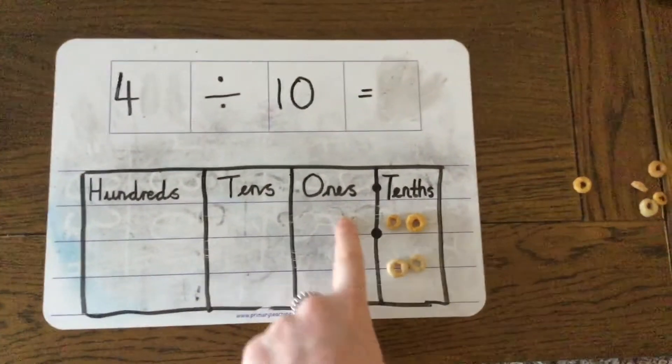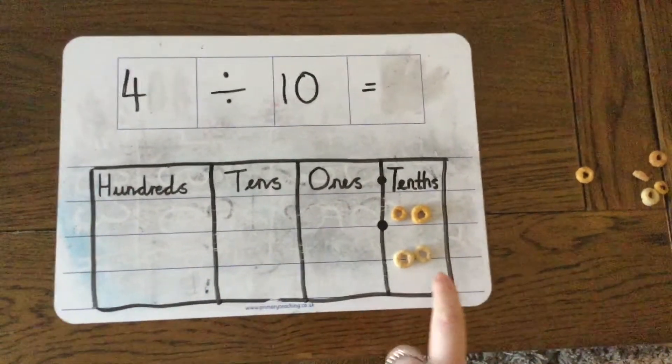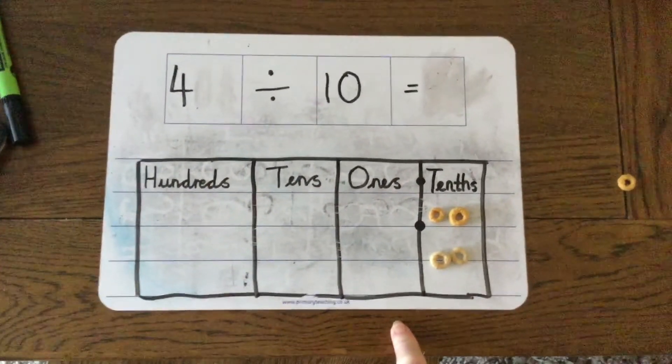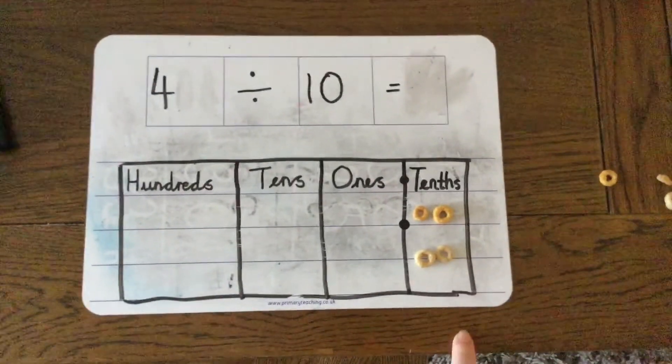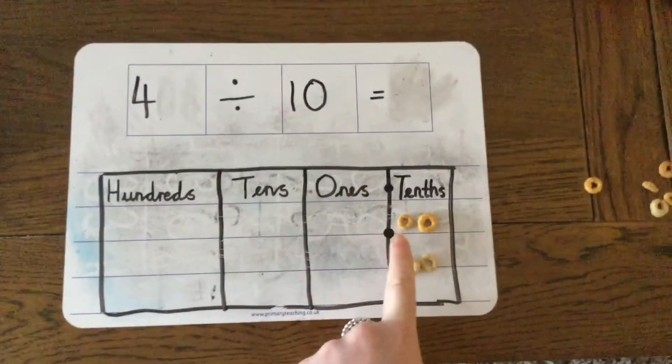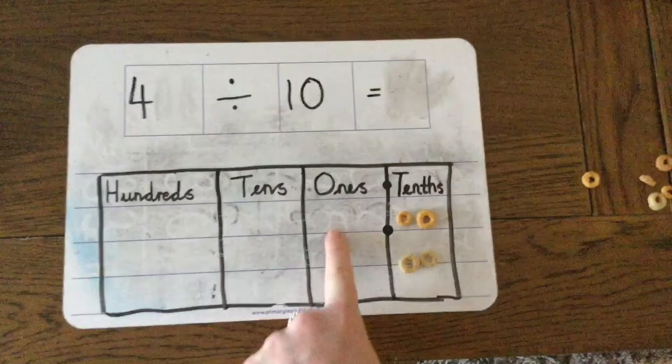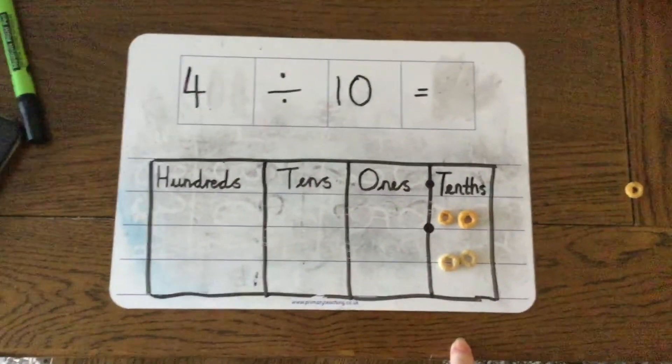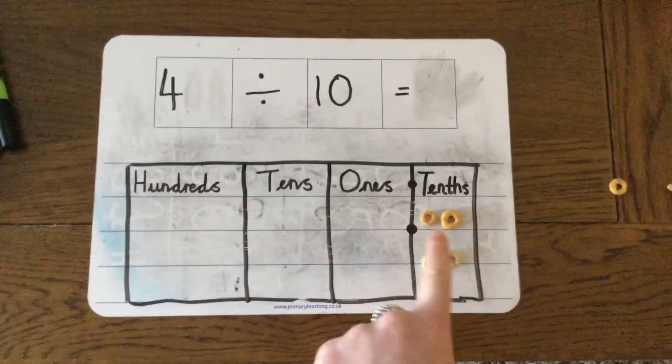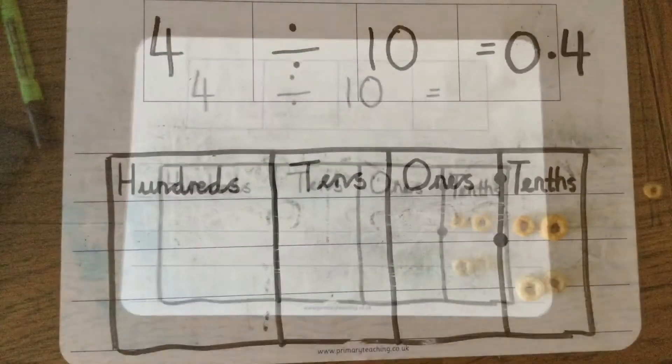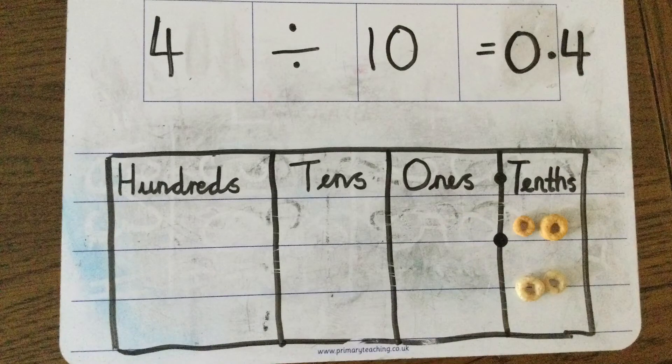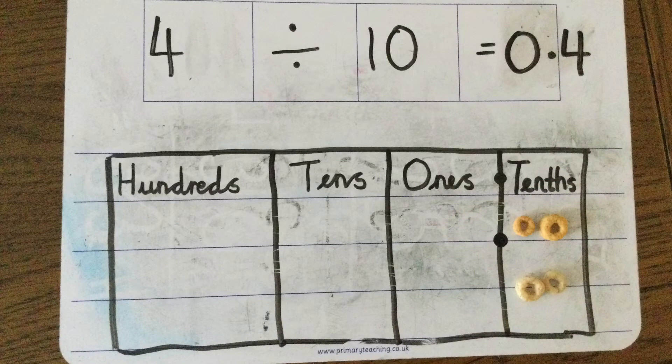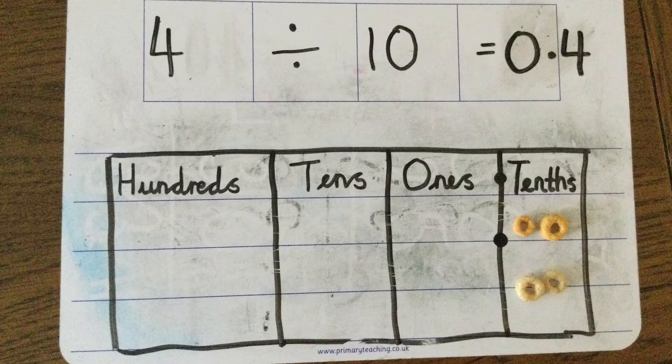I've got nothing in my ones column. I've got 4 in my tenths column. So my answer is going to be 4 tenths, but we write it as 0.4 because I've got nothing in my ones column. So 4 divided by 10 is 0.4. You can see the place value of the 4 has changed from 4 ones to 4 tenths. It's really important to remember that the decimal point does not move. It's only the place value of the digits that change.